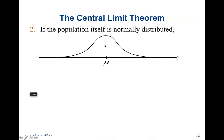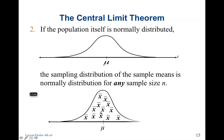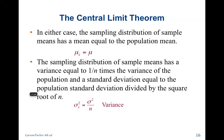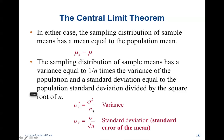If the population itself is normally distributed, it continues to be normally distributed, yet it is going to be skinnier — because we took the standard deviation and divided it by the square root of n, so the standard deviation gets smaller, which also ends up making it taller. In either case, the sampling distribution of sample means has a mean equal to the population mean, variance divided by n, and standard deviation divided by the square root of n.